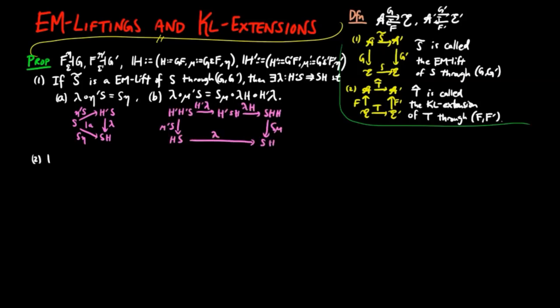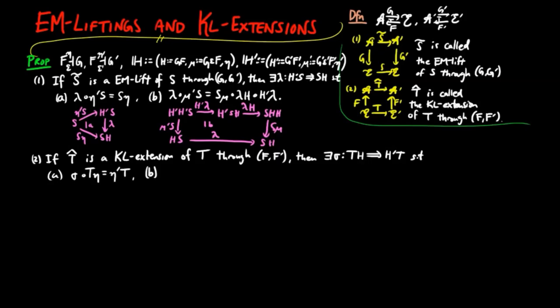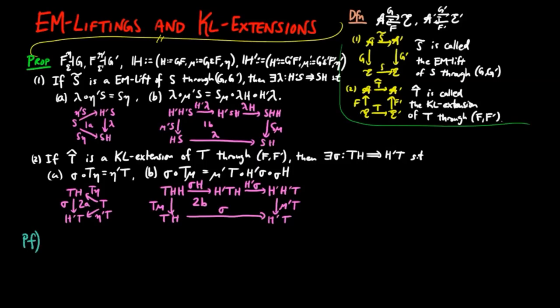And 2. If T hat is a Kleisle extension of T through F F prime, then there exists a natural transformation σ from TH to H'T, such that A, sigma T eta is equal to eta prime T, and B, sigma T mu is equal to mu prime T H prime sigma sigma H, as indicated in the following diagrams.